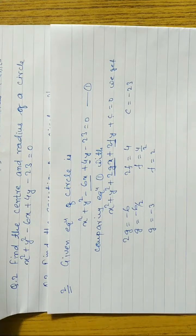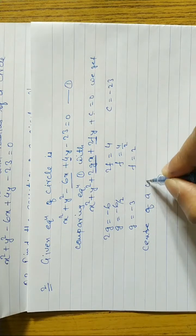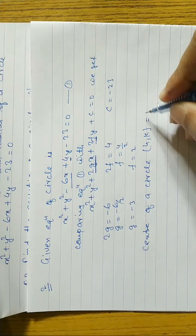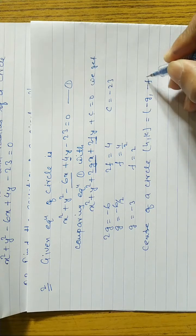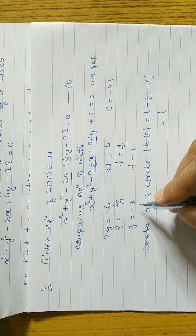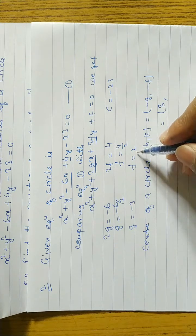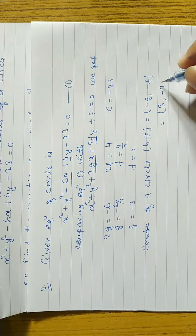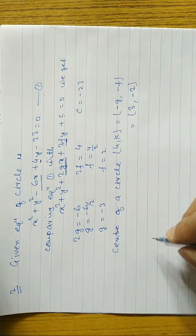Center of a circle (h, k) is equal to (-g, -f). So we write: minus g — g is equal to -3, so minus of -3 gives +3. Then minus f — f is equal to 2 — so minus 2. Therefore center of a circle is (3, -2). Now we have to find out the radius.